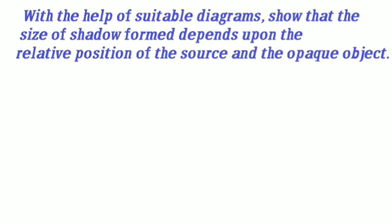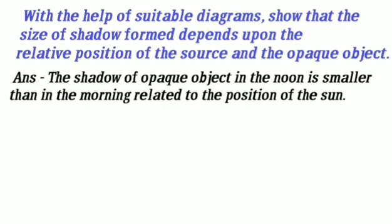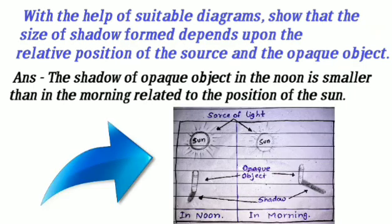Question 2: With the help of suitable diagrams, show that the size of shadow formed depends on the relative position of the source and the opaque object. Answer: The shadow of an opaque object at noon is smaller than in morning, related to the position of the sun.